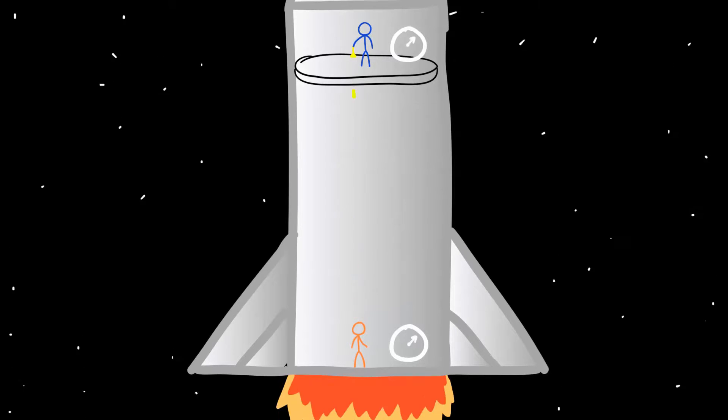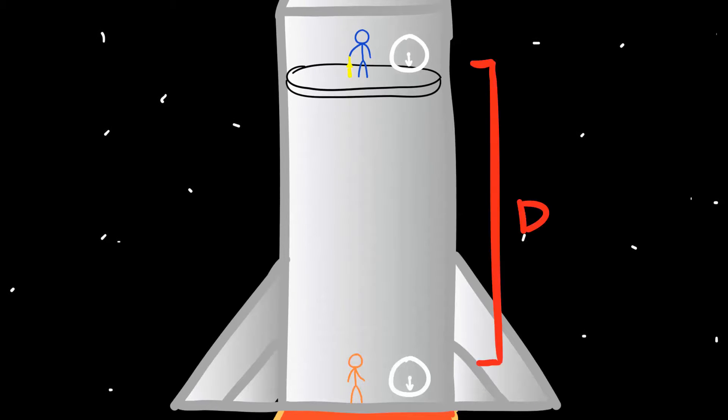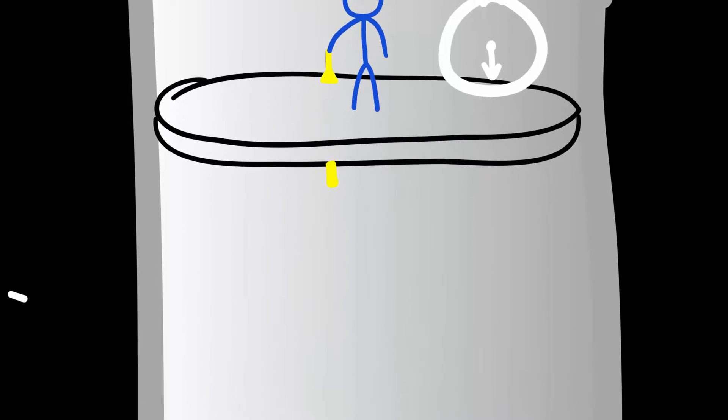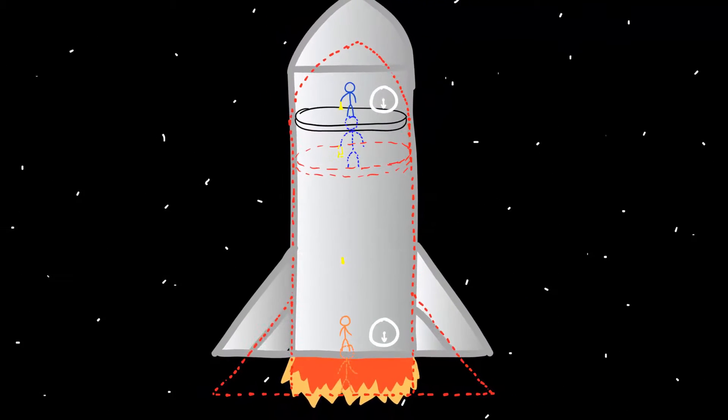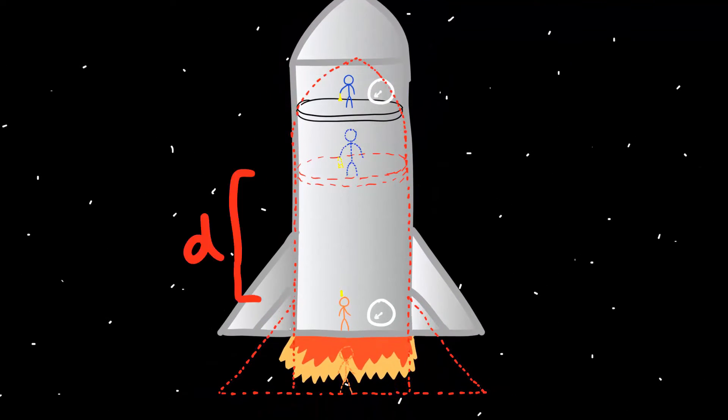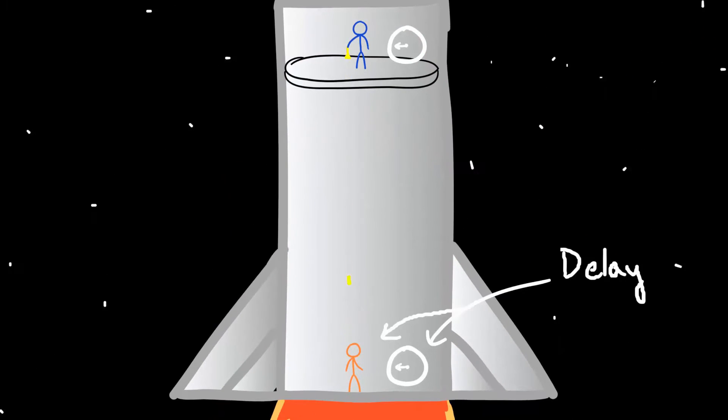But if the rocket is accelerating, the situation changes. During the instant the light pulse is sent, the distance between Sal and me is still D. But as the light moves towards me at a constant speed, I am being accelerated by the rocket towards it. So now the distance that light has to travel is less than D. So the time it's going to take to reach me is now less than a second. Now this happens for all the later pulses because the rocket has been accelerating all this time.